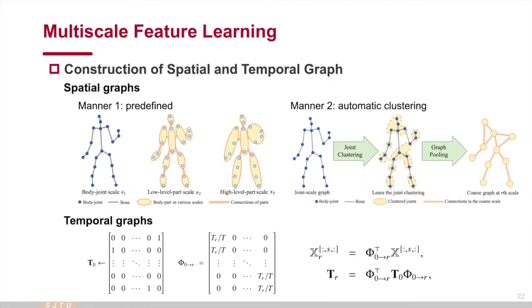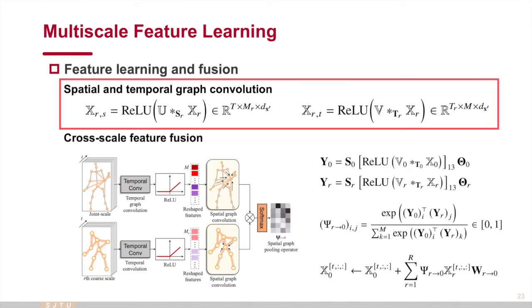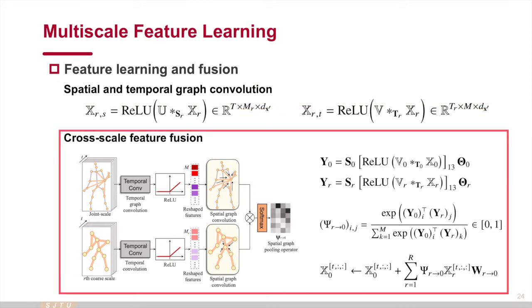To build the multiscale graph in the spatial domain, there are two strategies. The first is to average the nearby joints according to the human priors. The second is to use a trainable joint clustering and pooling method to group the joints similar in the hidden space. As for the temporal graph, we directly average consecutive frames as a shorter sequence. To learn the multiscale features, we use parallel graph convolution in both spatial and temporal domains. For feature fusion, spatial features rely on a cross-scale affinity matching for coarse-to-fine feature mapping. Temporal feature directly duplicates the coarse features to the fine scale.